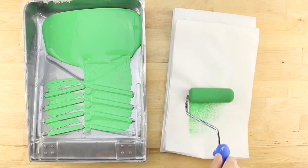Next, roll the excess paint off the roller into a paint tray before evening out the spread on a piece of paper towel.